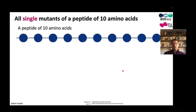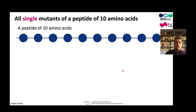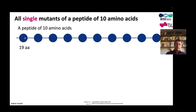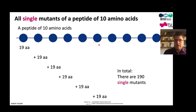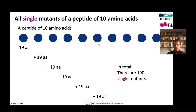The second challenge is the vast combinatorial diversity and the many degrees of freedom we have. If we look at a peptide of 10 amino acids and try to investigate all possible mutations, we incorporate 19 other amino acids at each position. So there are 10 times 19, giving 190 single mutants of a 10 amino acid peptide.